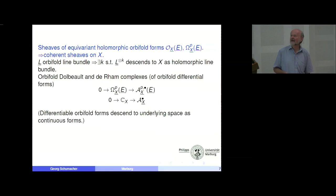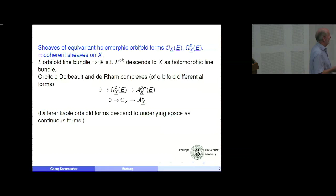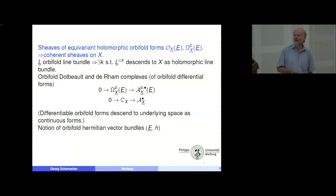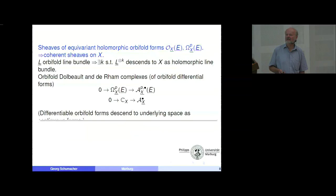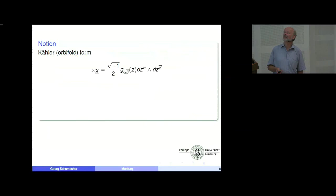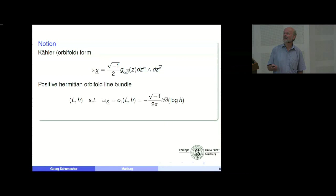There is one point to keep in mind: an orbifold differential form, even of class C^∞, will only descend to the bottom as a form with continuous coefficients. We have the notion of orbifold Hermitian vector bundles, which gives us the notion of orbifold curvature forms. A Kähler orbifold form descends to the base space with continuous coefficients. Here we have the notion of a positive orbifold line bundle.